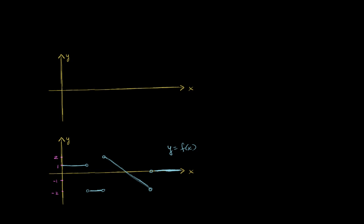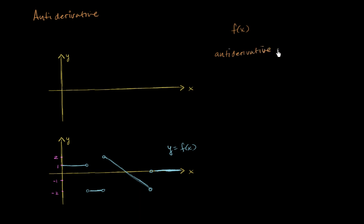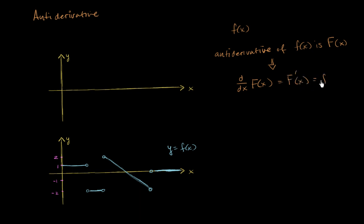In the last video, we looked at a function and tried to draw its derivative. Now in this video, we're going to look at a function and try to draw its antiderivative. The antiderivative of a function is a function whose derivative is that function. If we have f of x, and the antiderivative of f of x is capital F of x — this tends to be the notation — this literally just means that the derivative of capital F of x, which is F prime of x, is equal to f of x.